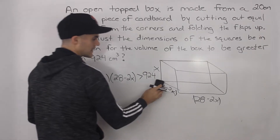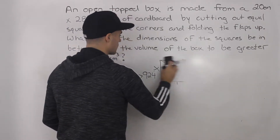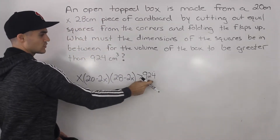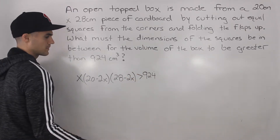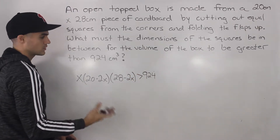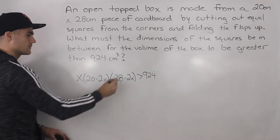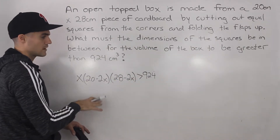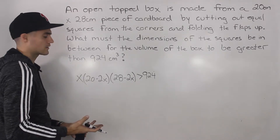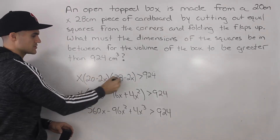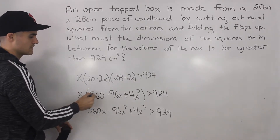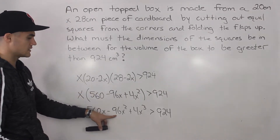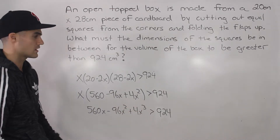Usually when they've been asking these volume questions, they say what are the dimensions if the volume is equal to something. Here, they're saying the volume has to be greater than 924. So now this is just a polynomial inequality. What we have to do is expand everything on the left side, bring that 924 over, and then solve that polynomial inequality by factoring. When we foil these two brackets out, keeping that x outside, we get 560 minus 96x plus 4x squared. Then bringing this x value in, we get 560x minus 96x squared plus 4x cubed, which has to be greater than 924.